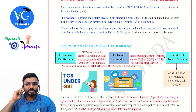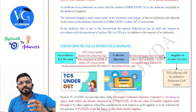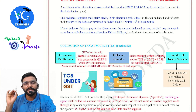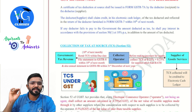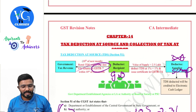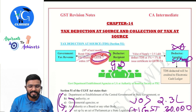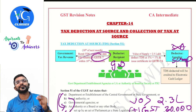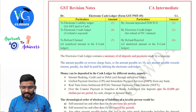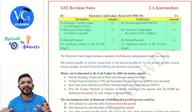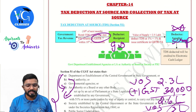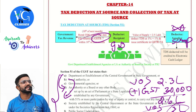A certificate of tax deduction at source shall be issued in Form GSTR-7A by the deductor to the deductee. The deductee — that is, the supplier — shall claim credit in his electronic cash ledger of the tax deducted, as reflected in the return of the deductor furnished in Form GSTR-7 within the 10th of next month. As soon as the deductor deposits the TDS and files GSTR-7, it will be auto-credited to the electronic cash ledger of the supplier.